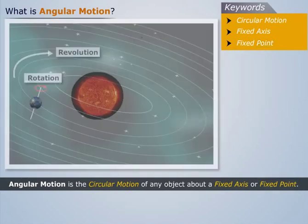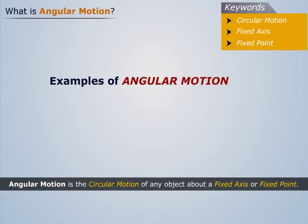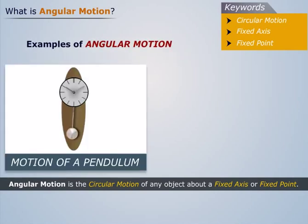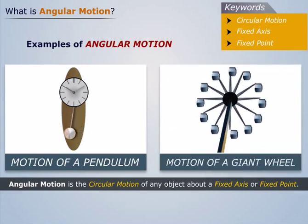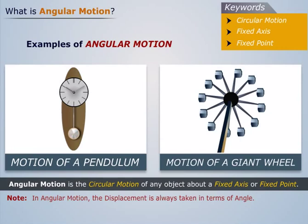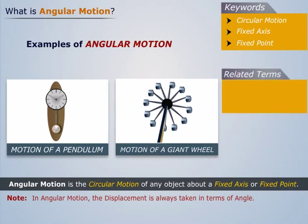Some of the examples of angular motion are the motion of a pendulum and the motion of a giant wheel, etc. Note that in angular motion, the displacement is always taken in terms of angle. Related terms are circular motion and rotation.